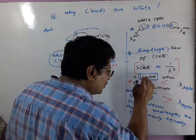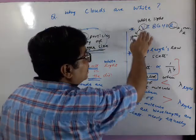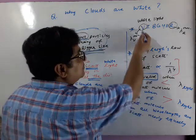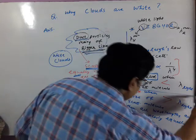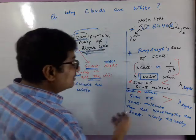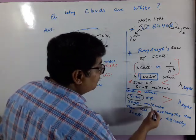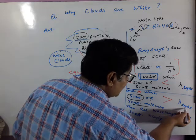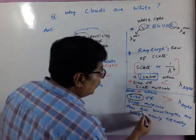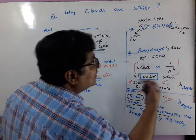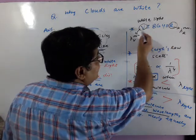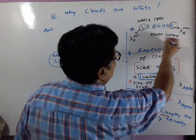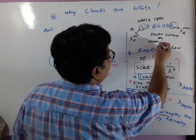Jab scattering molecule ka size bhoat chhota hai, us samayi alag-alag color, alag-alag scattering show kertah hai. Us samayi blue color sabse jahadha scattering show kertah hai. Lekin agar size of scattering molecule greater than wavelength of the white light hho, us samayi all wavelengths, means all the colors. These are seven colors having seven different wavelengths. So we call it like seven colors or seven wavelength.